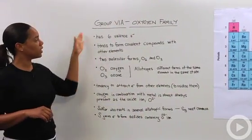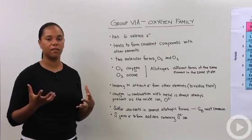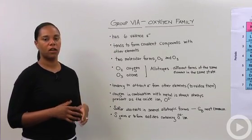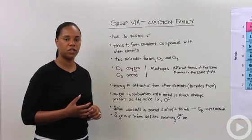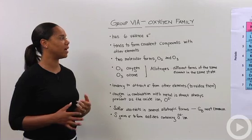So group 6, the oxygen family, as you can imagine, has six valence electrons. Recall again that the valence electrons become important when we're talking about electron configurations and thus figuring out how it is that oxygen interacts with other elements and compounds.